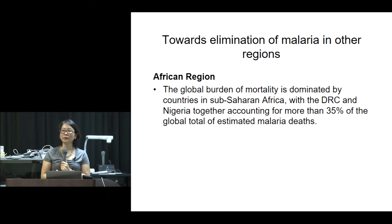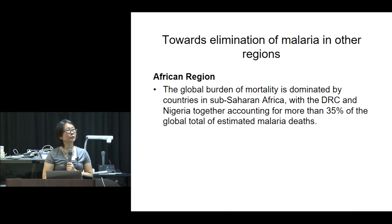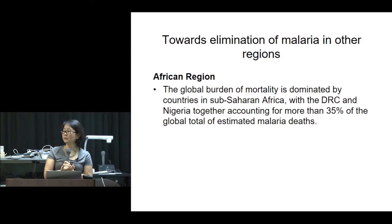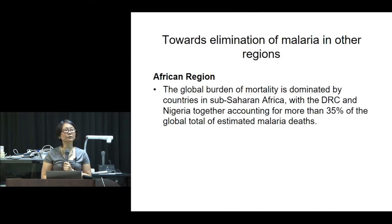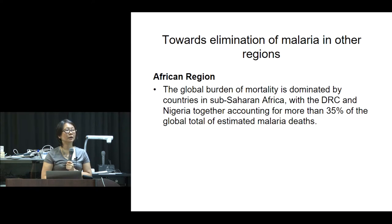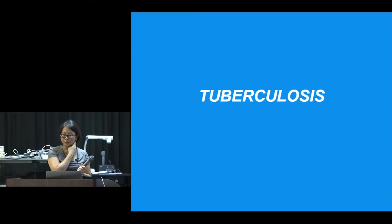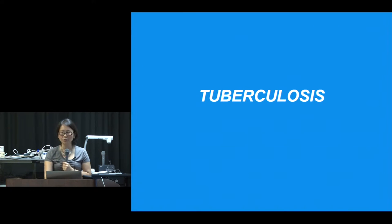The global burden of malaria mortality is dominated by countries in sub-Saharan Africa. Democratic Republic of Congo and Nigeria together account for 35% of the global total of estimated malaria deaths. Now let's look at another disease still posing very big challenges to the world: tuberculosis.